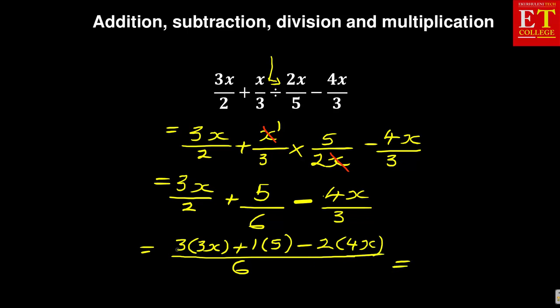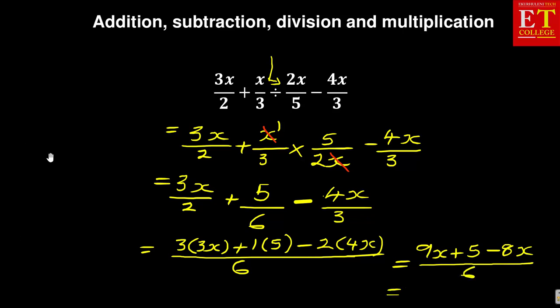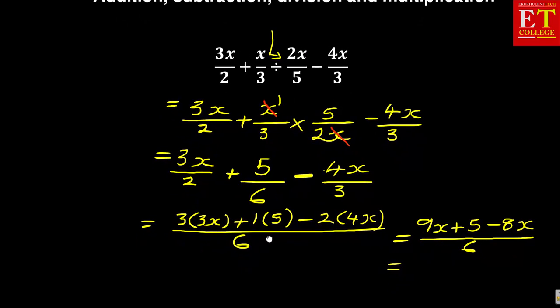This then becomes 3 times 3, it will become 9x plus 5 minus 8x over 6, which then becomes, you collect the 9x minus 8x, it will be x plus 5 over 6.